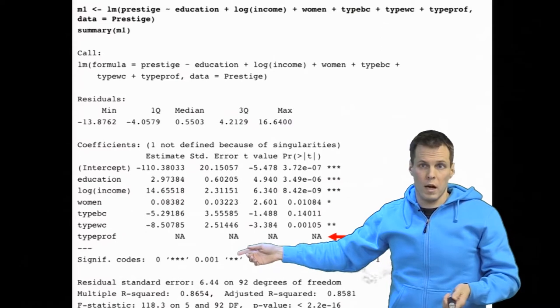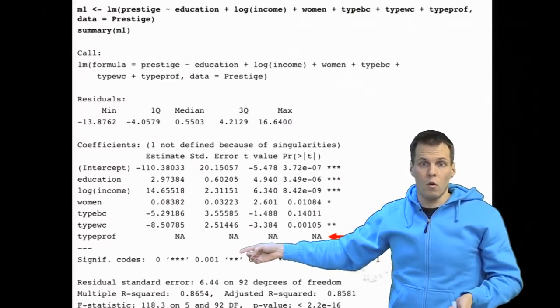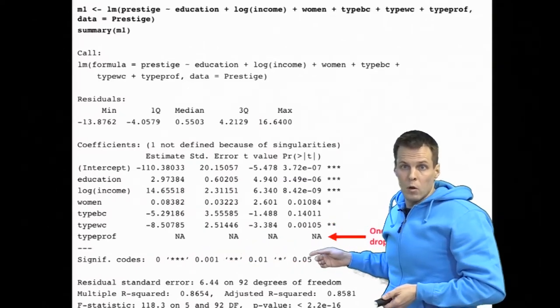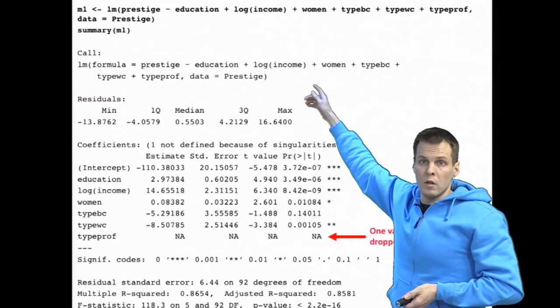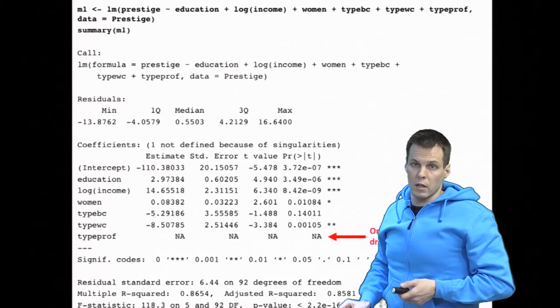So the software has two alternatives. Either it refuses to even try, or it just drops one of the variables to make them all estimable. Whichever variable is dropped probably depends on the order of entry of the variables, but it's not documented behavior of R.